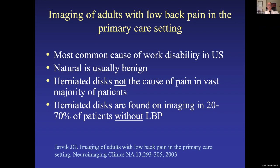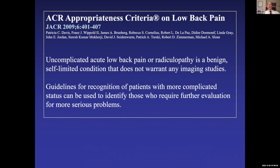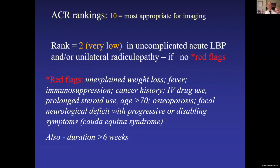The conclusion is that the most common cause of work disability, back pain, is usually benign. Herniated discs are often not the cause of pain in most patients. You can see discs and other problems in 20 to 70 percent of patients who have never had back pain. The American College of Radiology appropriateness criteria, published in 2009, states that uncomplicated acute low back pain — even radicular pain — is benign and self-limited almost all the time, and imaging is not warranted. ACR ranking of 10 is most appropriate; uncomplicated acute low back pain is ranked at two.